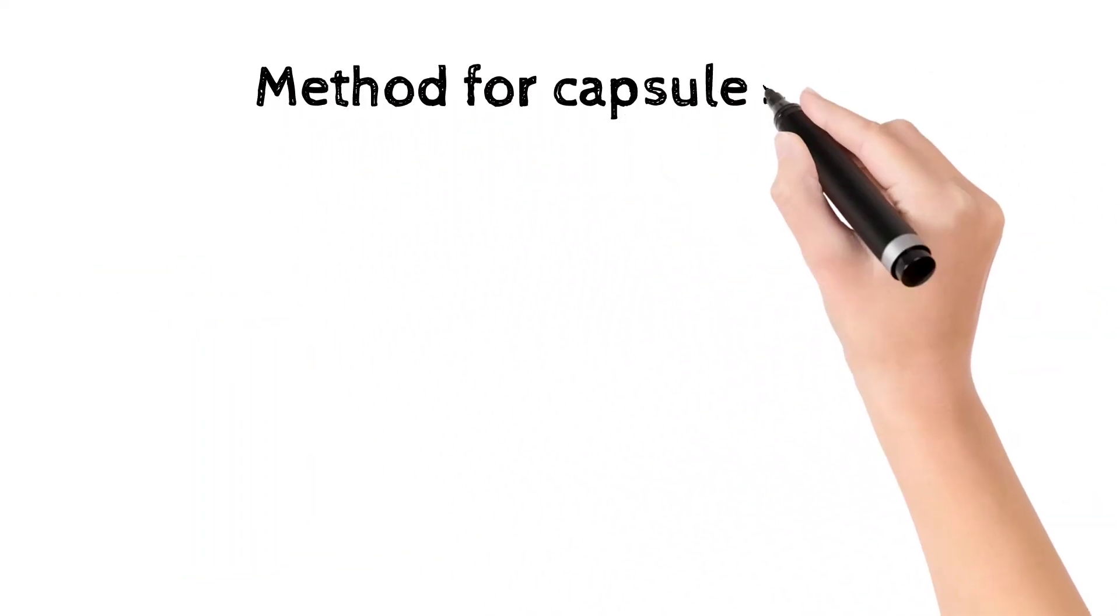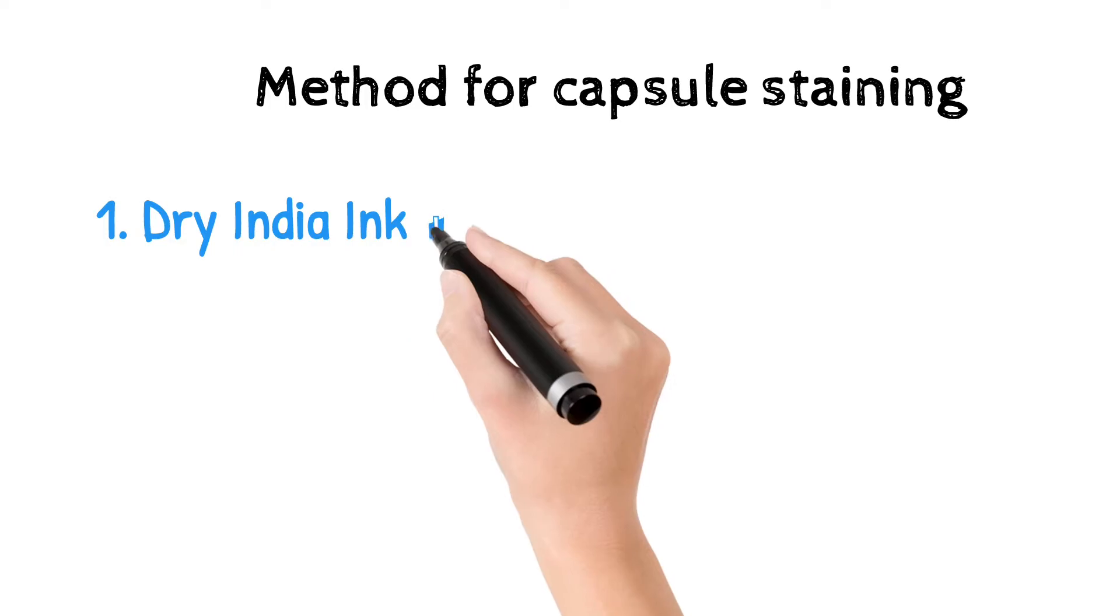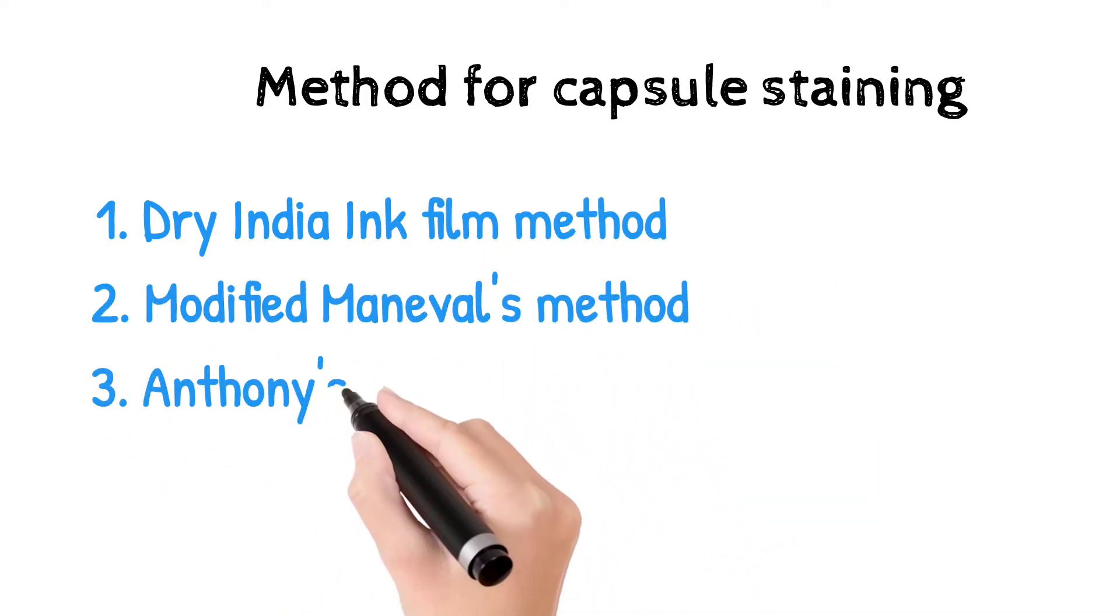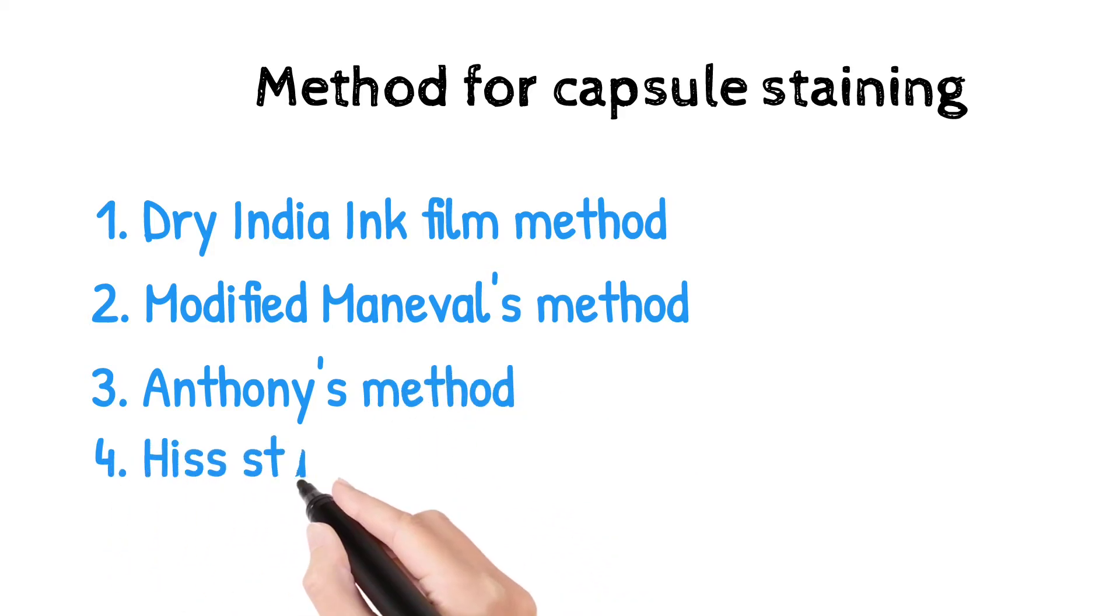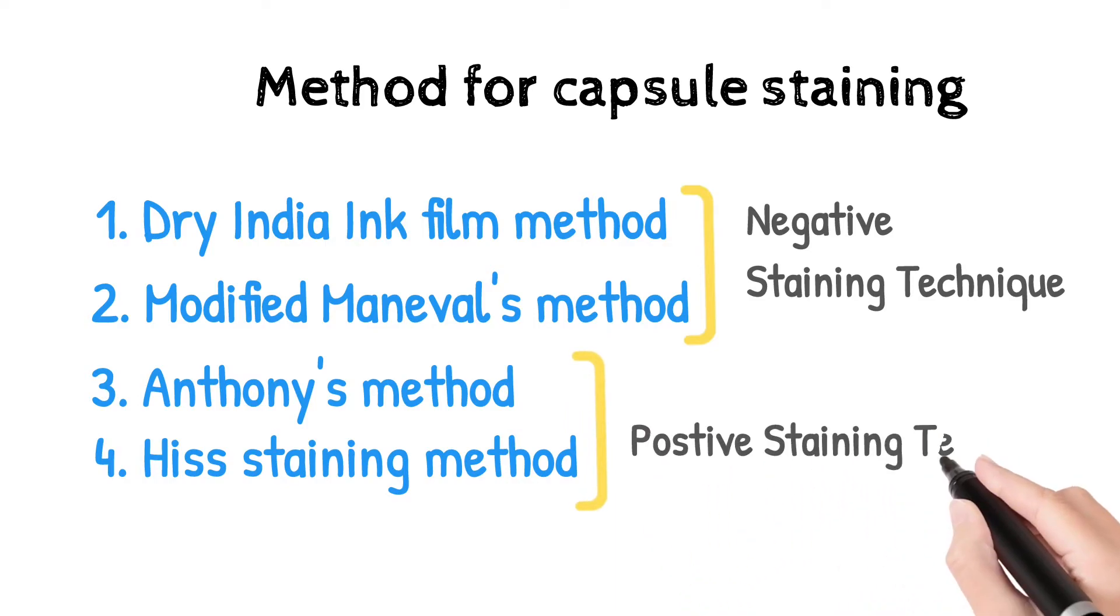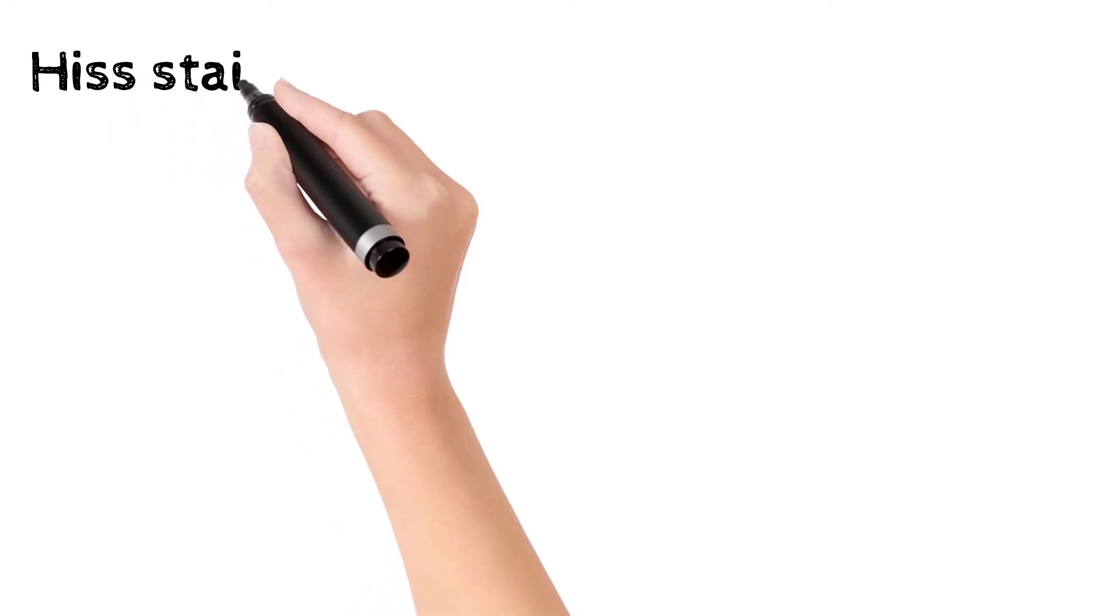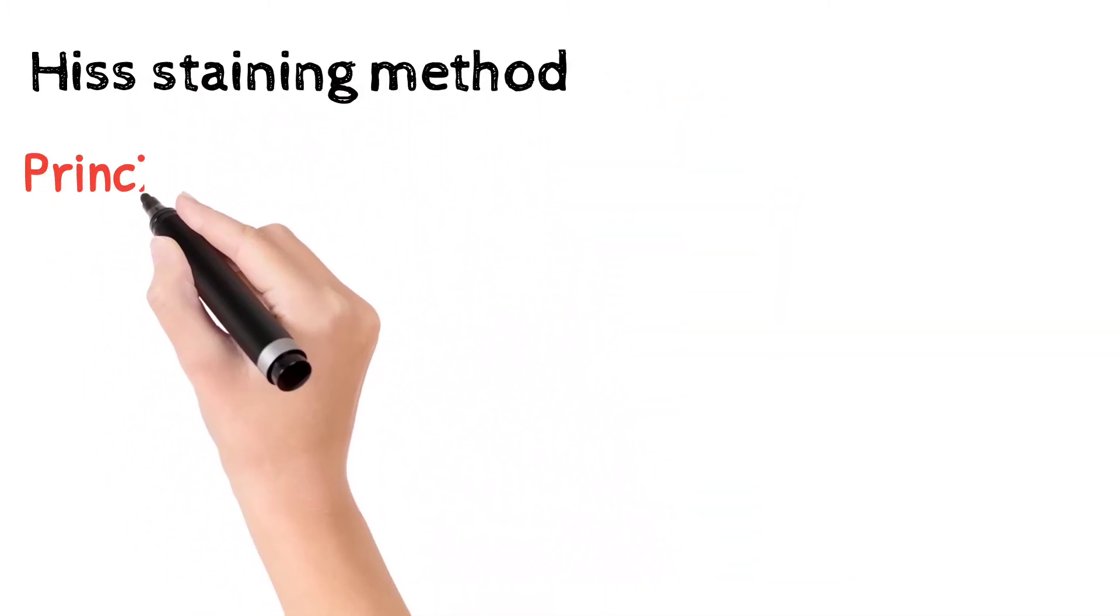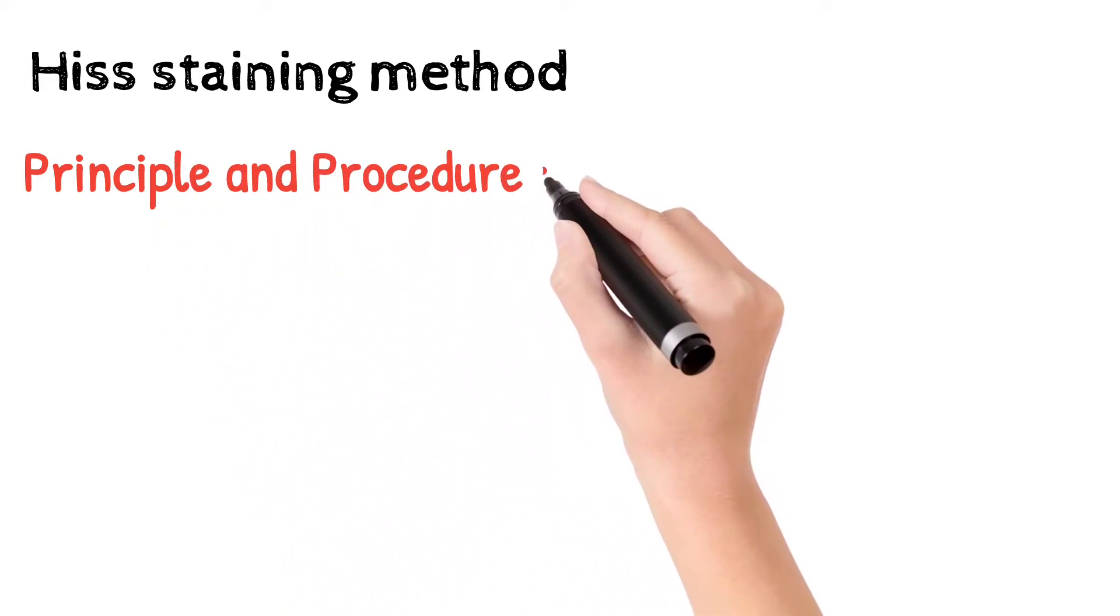There are various capsule staining methods used, such as India ink method, Maneval's method, Anthony's method, and Hiss method. India ink and Maneval's methods are negative staining techniques, whereas Anthony's and Hiss methods are positive staining techniques. In this video, we are going to learn Hiss method. If you want videos on other techniques, let me know in the comments.